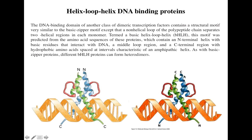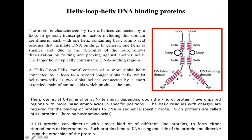Looking at just one monomer — the one represented in blue — we see a short loop connecting a short alpha helix with a longer alpha helix. This blue monomer then dimerizes with the green monomer. One of the two helices recognizes the DNA binding domain, and this could be an N-terminal or C-terminal alpha helix depending upon the type of protein involved. In both cases, one helix recognizes a specific DNA sequence and the second helix dimerizes with another monomer.